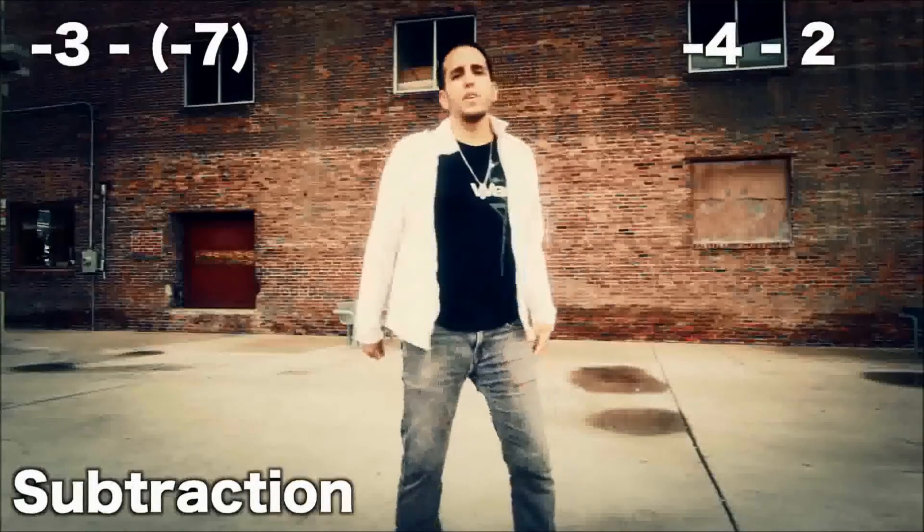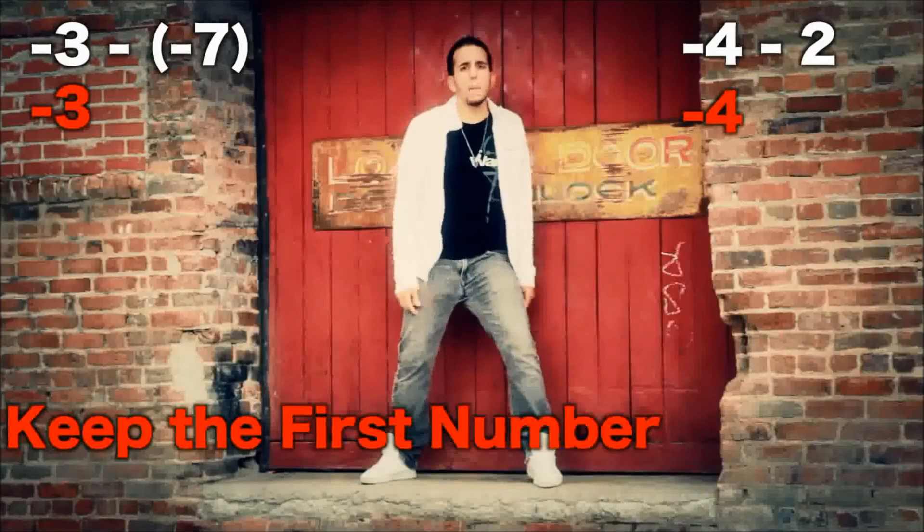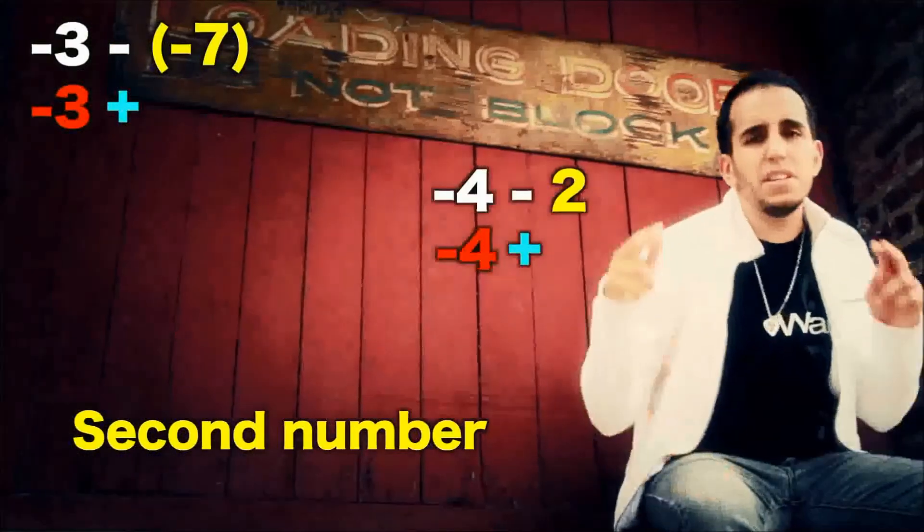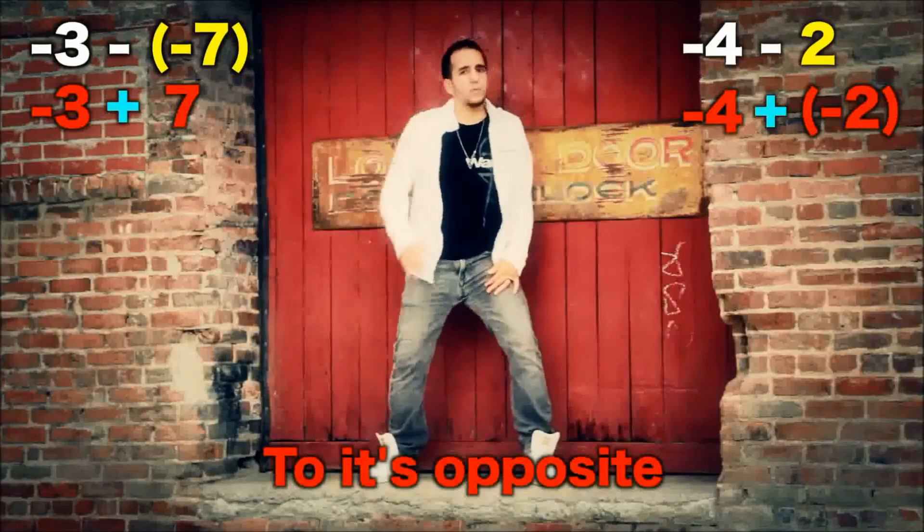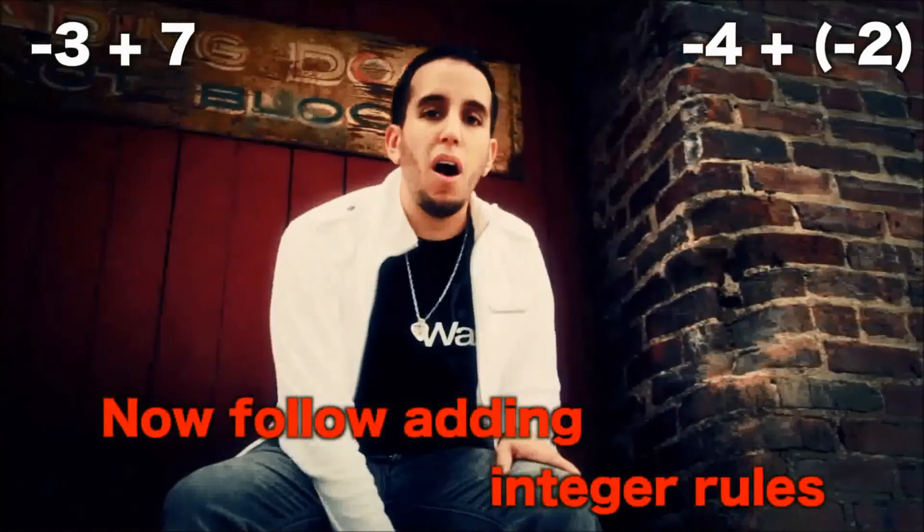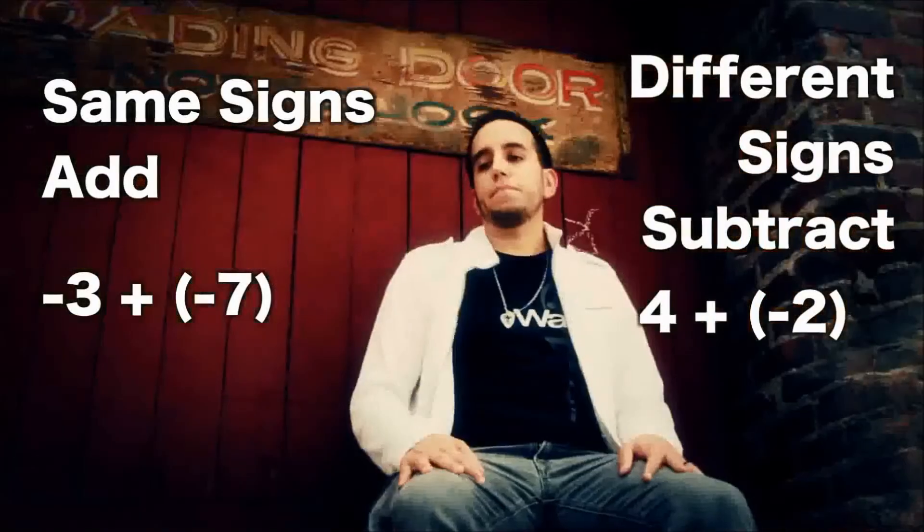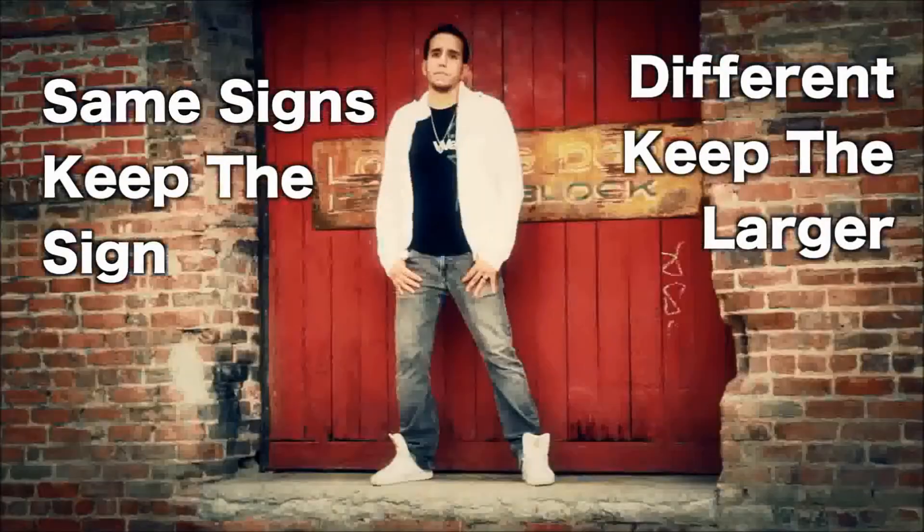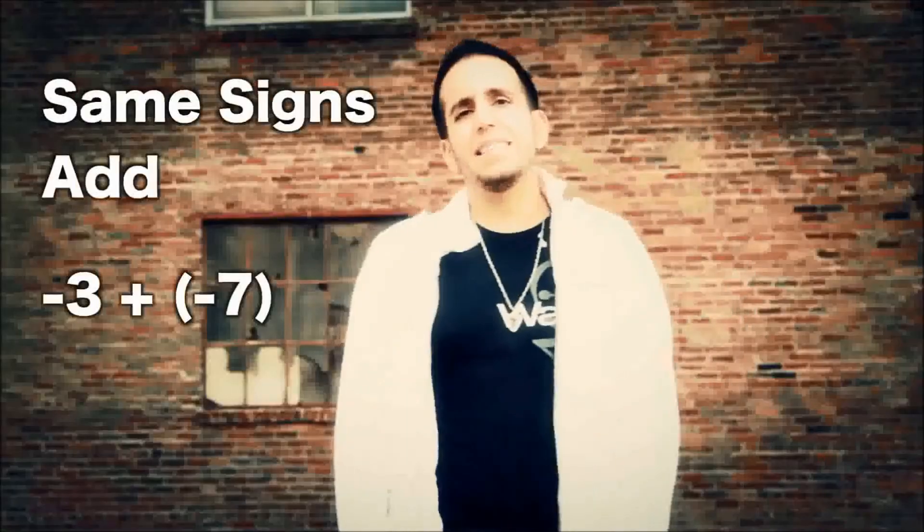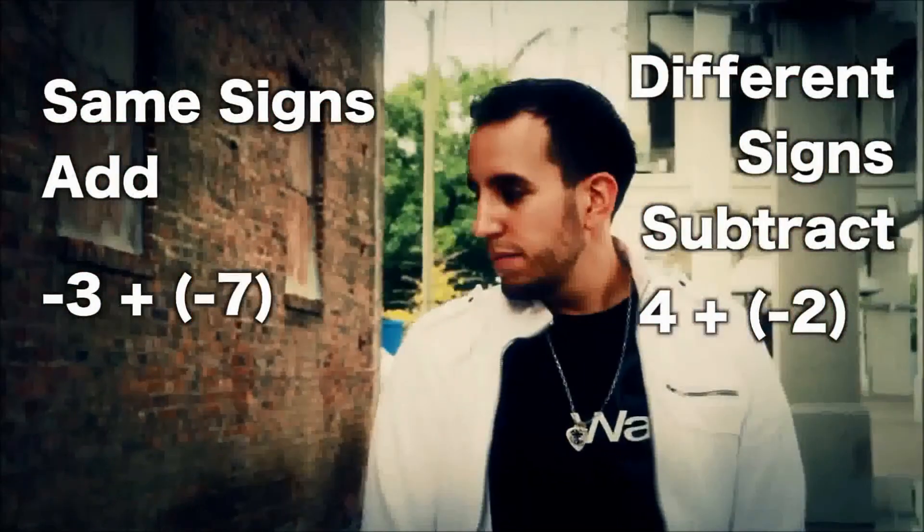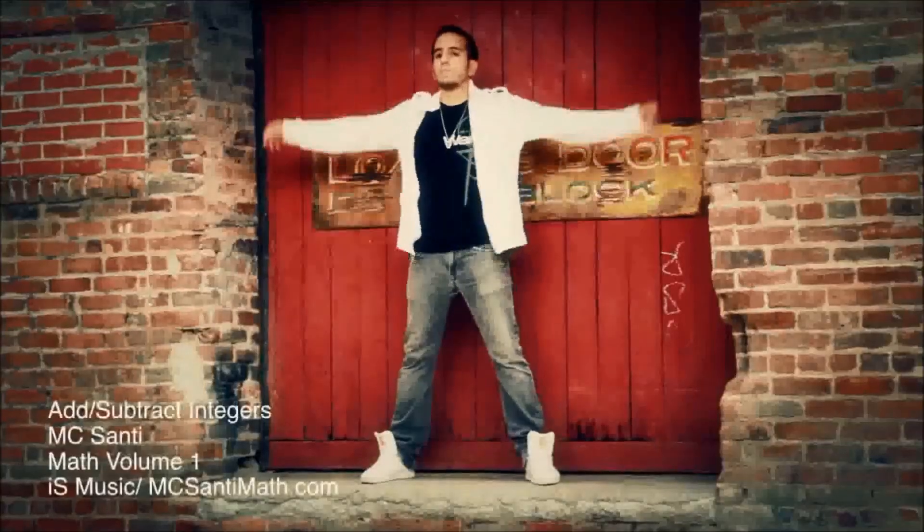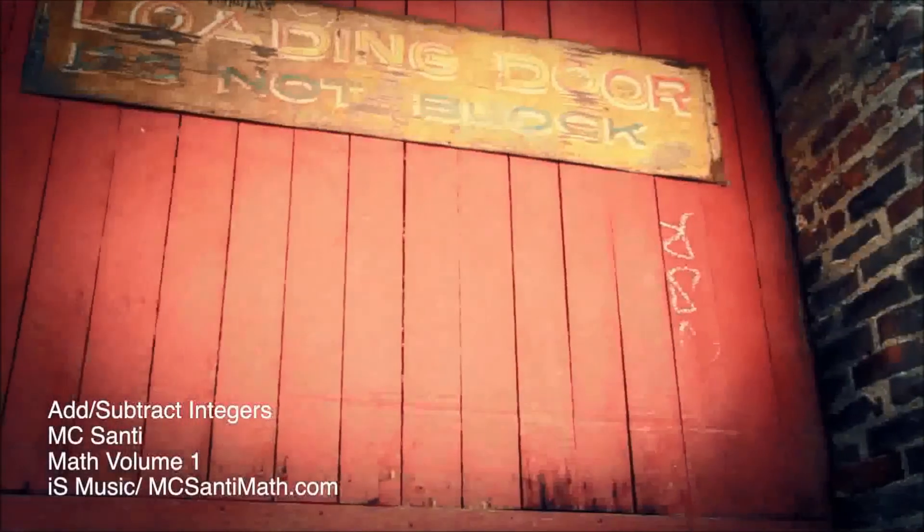Now there's a change, subtraction. You tried to trick me, but this is easy. Keep the first number, then change that minus sign to a plus, it's a game. Second number, change it to its opposite, that's what we do. What do you know, we're back to the start. It's now addition, and you know this part. Same sign's there, different sign's subtract. Same sign, keep the sign, different, keep the larger.